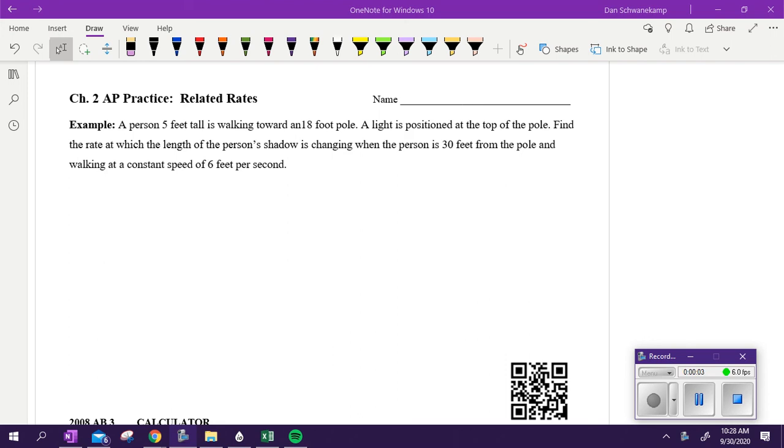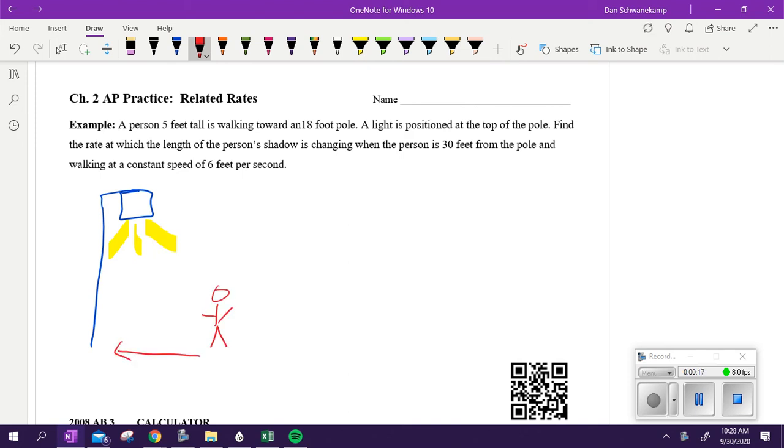First problem says a person five feet tall is walking toward an 18-foot pole. So when in doubt, draw a little picture of it. It'll help you out. Five feet tall. They are walking towards an 18-foot pole. Find the rate at which the length of the person's shadow is changing when the person is 30 feet away from the pole and walking at a constant speed of six feet per second.